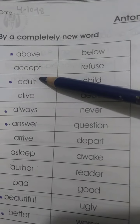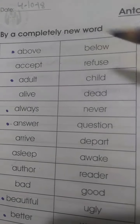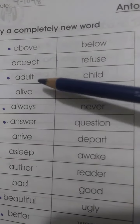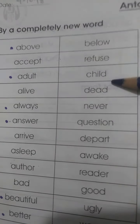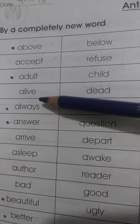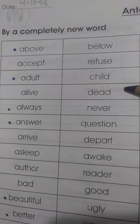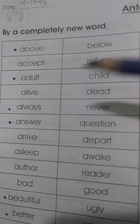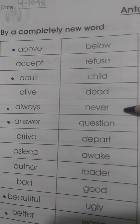'Accept' — antonym is 'refuse' or 'reject'. 'Adult' — antonym is 'child'. 'Alive' — antonym is 'dead'. 'Always' — antonym is 'never'.